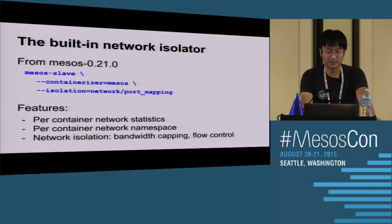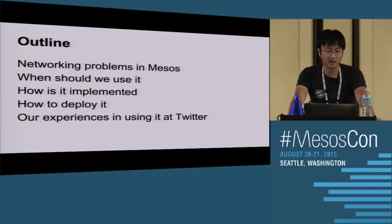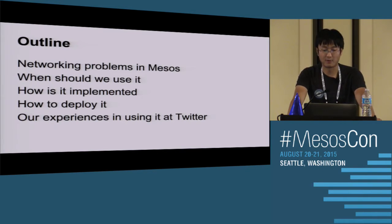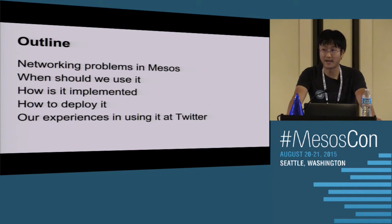This is the outline of my talk. I'm going to first go through the networking problems in MESOS before this isolator existed. Then I'll talk about when you should use this isolator - we built it based on some design constraints we have internally at Twitter, so it's important to understand the implications. Then I'll go through the implementation and how to deploy it in production, and share some experience we've had using it.